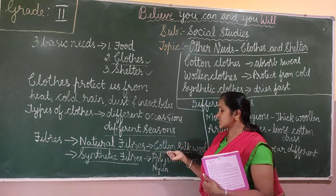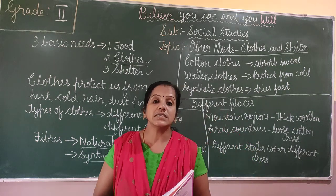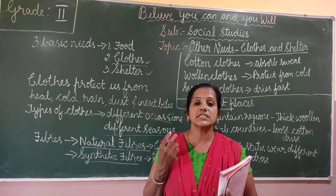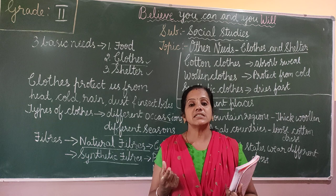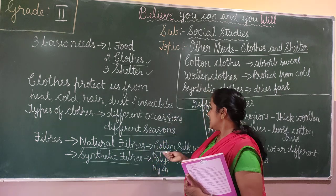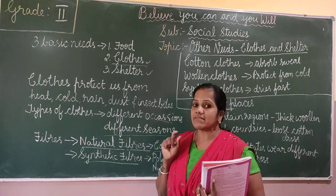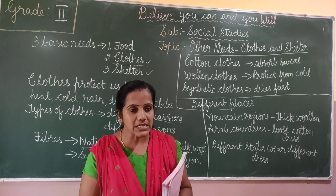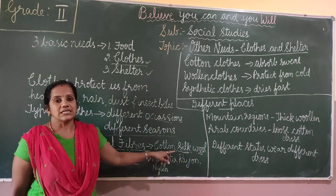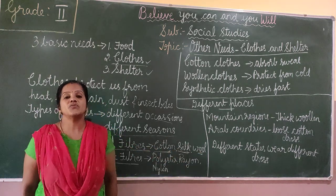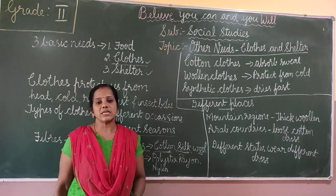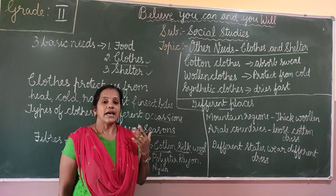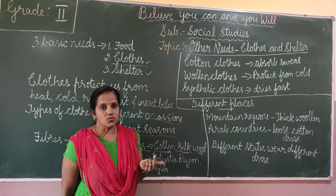Cotton we get from cotton plants — the cotton balls are spun into thread and later woven into cloth. Silk — the silkworm builds its cocoon and from this cocoon we get silk. Wool — the skin of the sheep is cut, dried, and spun into wool thread.